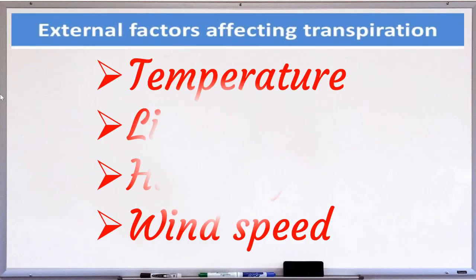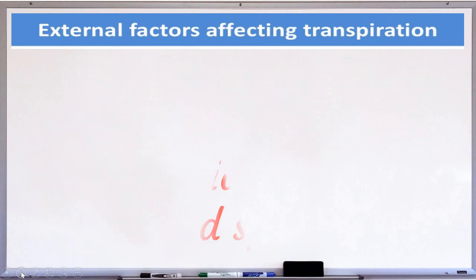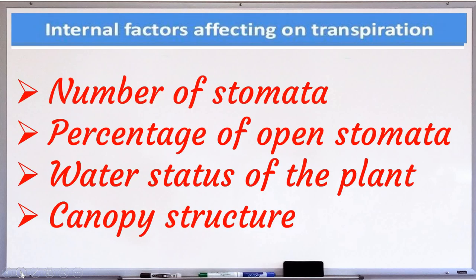Transpiration is affected by several external factors such as temperature, light, humidity, and wind speed, and internal factors such as number of stomata, percentage of open stomata, water status of the plants, and canopy structure.